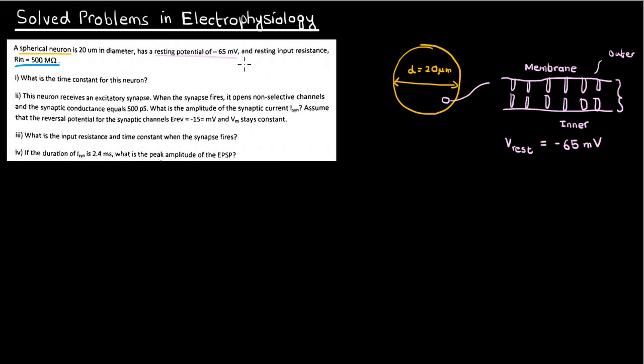You're also given the resting input resistance, which is 500 megaohms. What this means is that when the cell is resting, there are a small number of ion channels that are open and conducting ions. The resistance of the cell due to these channels that are open by default is 500 megaohms. But if there weren't any channels open at all, this resistance would be much higher — it would approach infinity. Because there are channels open, you get a finite but still large resistance.